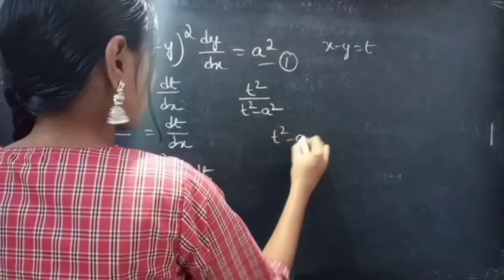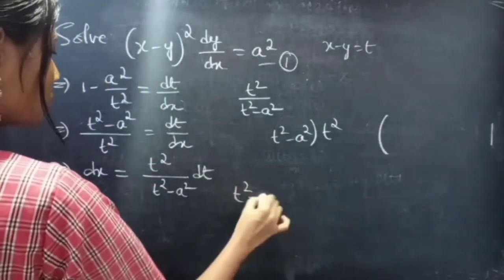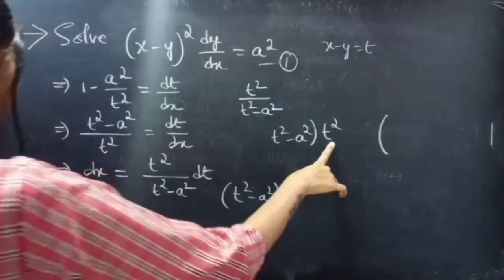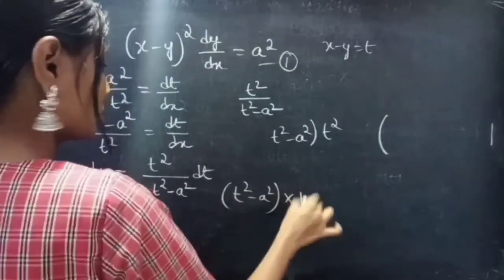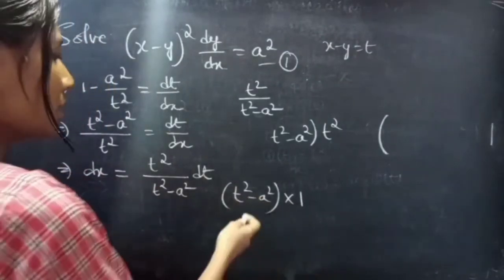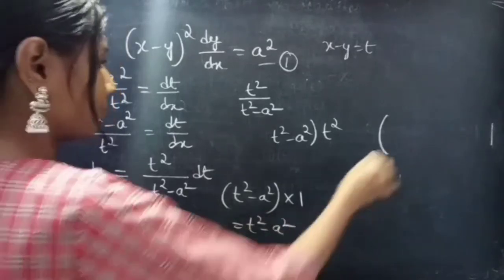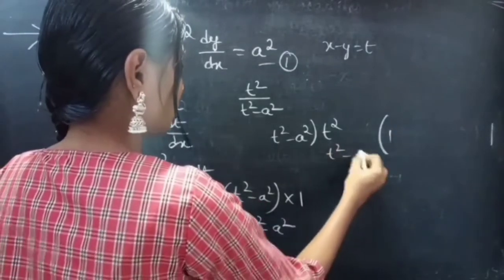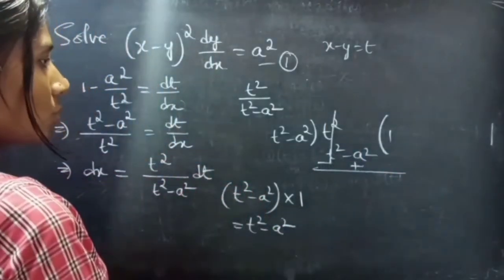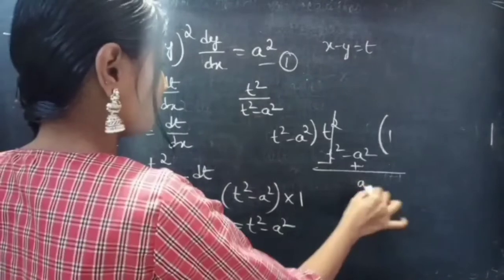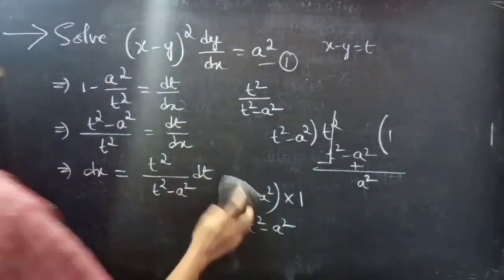Dividing t squared by (t squared minus a squared): multiplying the divisor by 1 gives t squared minus a squared. Changing signs, t squared gets cancelled and we get remainder a squared.